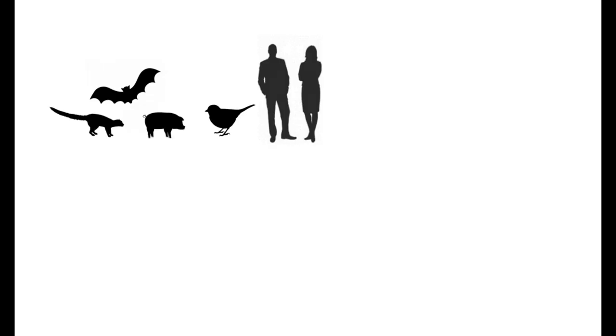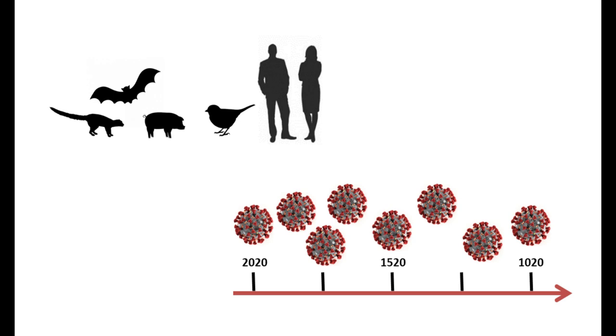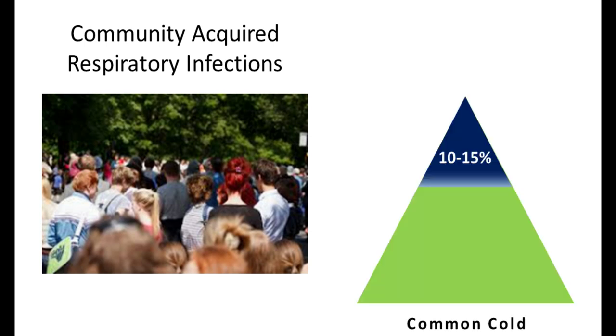Coronavirus is a virus that's endemic to animals, including humans, and has been around for over a thousand years. It is epidemiologically the cause of over 10%, close to 15%, of what we know as the common cold — a community-acquired upper respiratory tract infection.